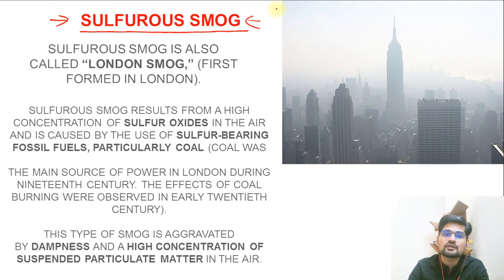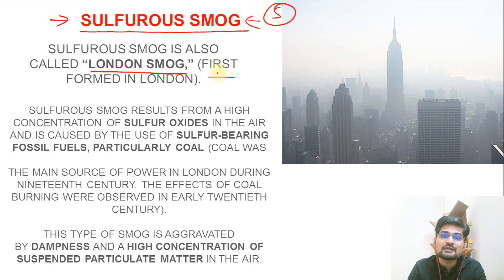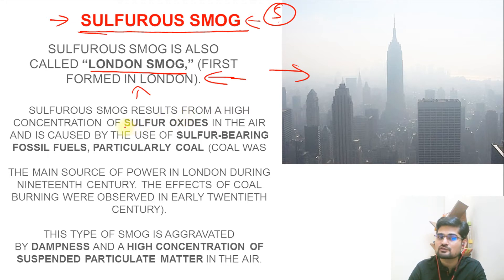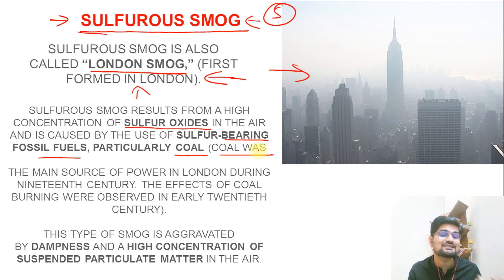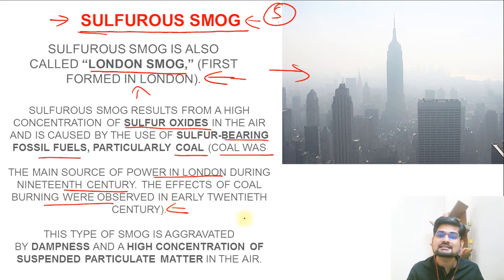The first type is sulfurous smog, where sulfur content is important. It is also called London smog because it was first identified in London city. Sulfurous smog results from a high concentration of sulfur oxides in the air and is caused by the use of sulfur-bearing fossil fuels, particularly coal. This sulfurous smog started happening in London in the 19th century, when coal was the major energy source. The effects of coal burning were observed in the 20th century, when this smog situation was identified as London smog.